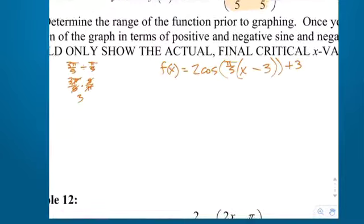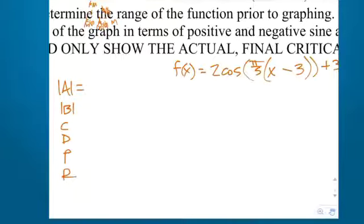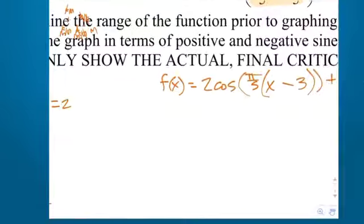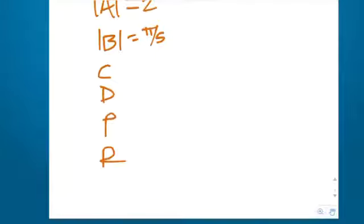Now we list our values: |A|, |B|, C, D, P, and R. |A| is 2, so the amplitude is 2. Even if A had been negative 2, the amplitude would still be 2 — amplitudes, like reference angles, have to be positive. B is π/5, so between 0 and 2π we'll see π/5 cycles. The period is 2π/B, so 2π divided by π/5 equals 10. For the first time we have a period that's not a multiple of π, so there will be no π on the x-axis.